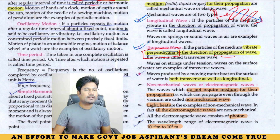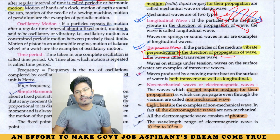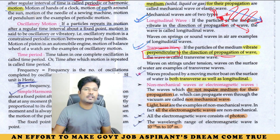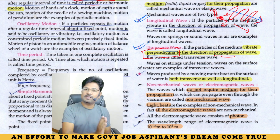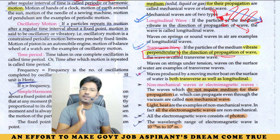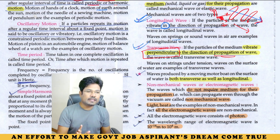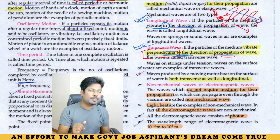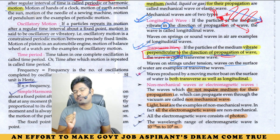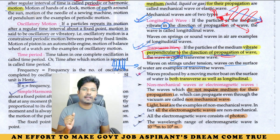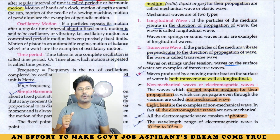Using X, Y, Z axes: if the wave moves along the Z direction and vibration is along the X direction, they are perpendicular. Examples of transverse waves include waves on strings under tension and waves on the surface of water, where the vibration is 90 degrees to the propagation direction.